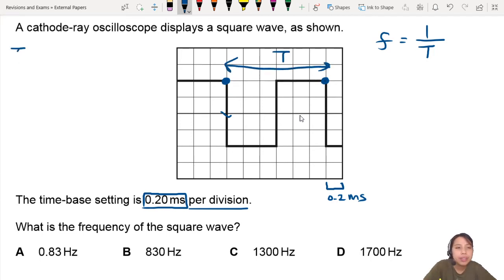So let's find the period first. How many boxes is that? 1, 2, 3, 4, 5, 6 boxes or 6 divisions as they call it.